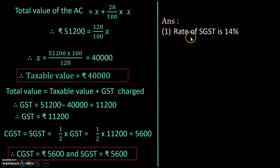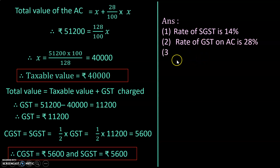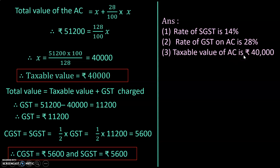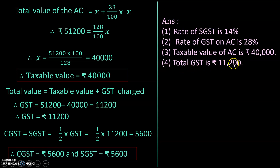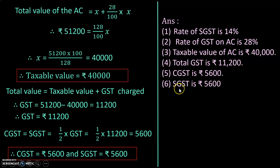Let us write the final answer for sum 6. Rate of SGST is 14 percent. Rate of GST is 28 percent. Taxable value is ₹40,000. Total GST is ₹11,200. CGST is ₹5,600 and SGST is ₹5,600. Hope the solution is clear students.